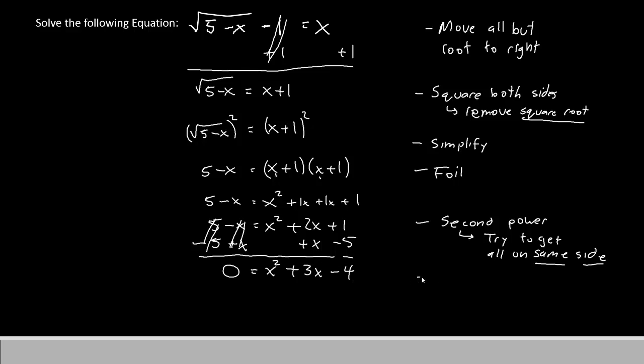To finish solving the second power equation, we're just going to need to factor. So, we'll say 0 equals these two parentheses. Can we think of two numbers that multiply to negative 4 but add to 3? I'm thinking 4 and 1 would probably work. Since we want positive 3 in the middle, let's make the larger number positive and the smaller number negative. So, we'll have x plus 4 and x minus 1. If we solve both of them, we'll end up with x equals negative 4 and x equals positive 1. Those are our two answers.